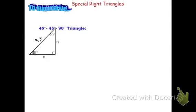In this video, we'll review how to solve for missing sides in special right triangles. To summarize, there are two types of special triangles you need to remember. The first is known as the 45-45-90 triangle, also called an isosceles right triangle.